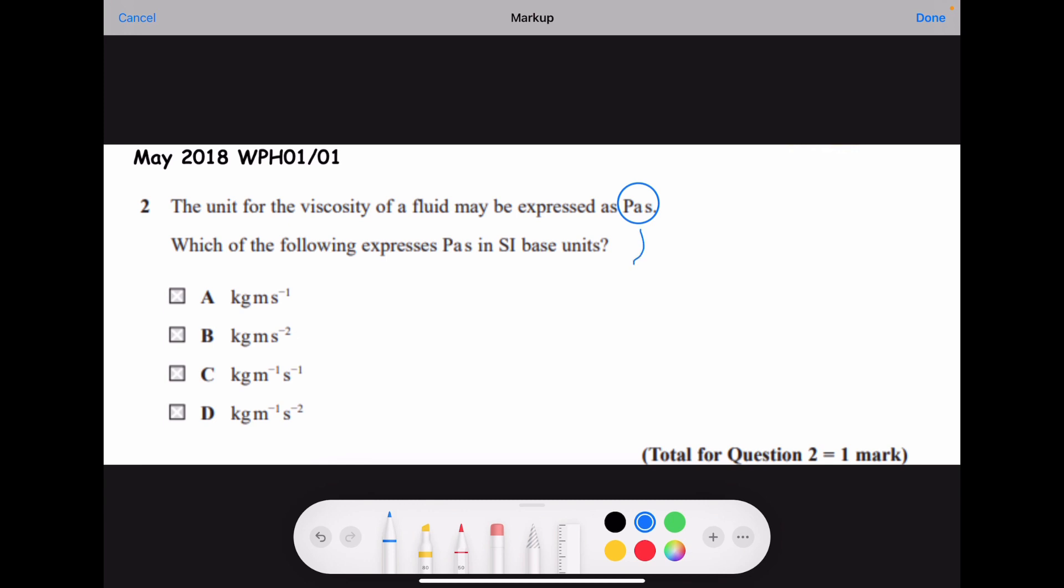Pascal is the unit of pressure and second is for time. Pressure is force over area. The force is mass times acceleration times the time divided by the cross-sectional area.